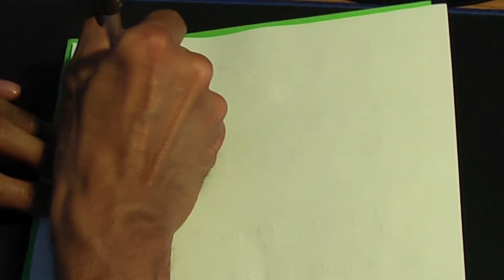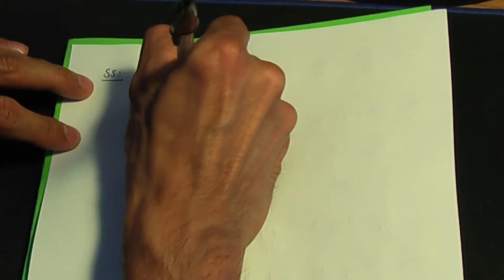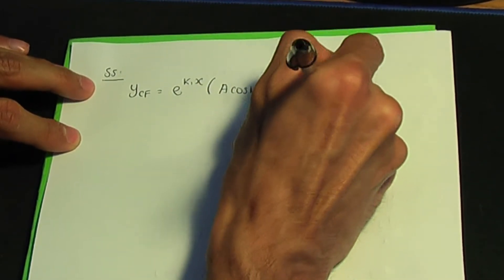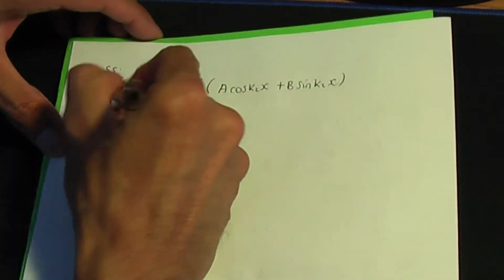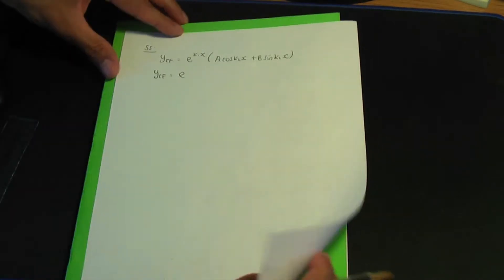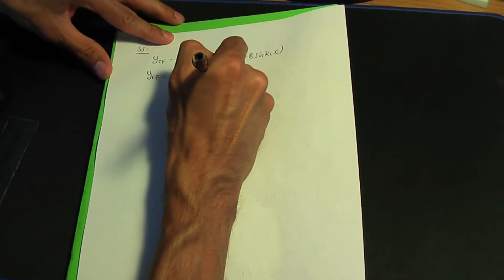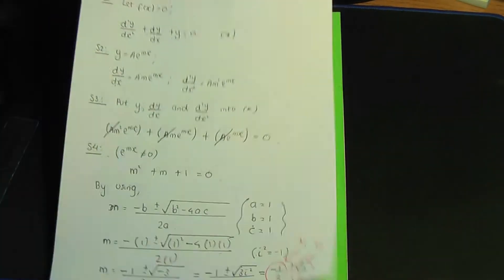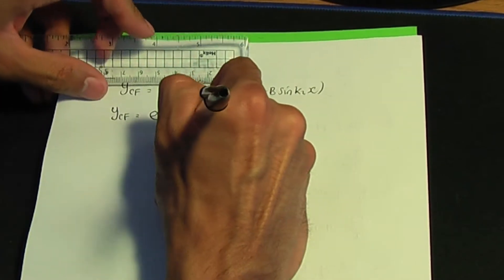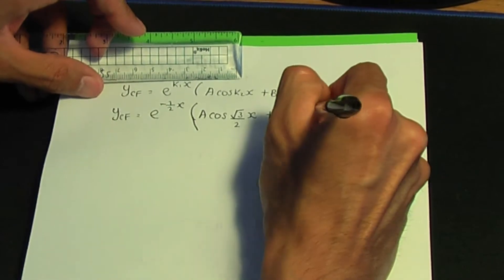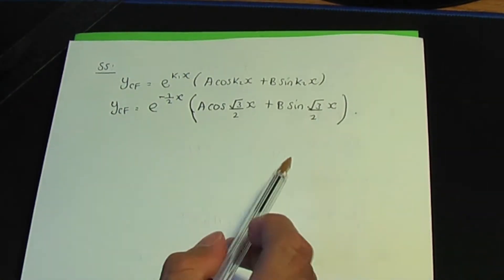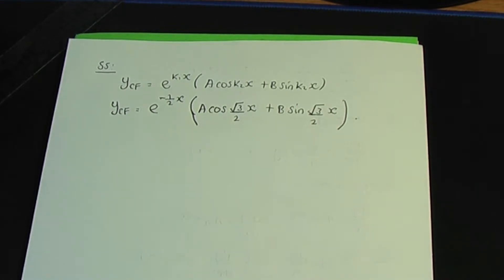Step number five — our choice for yCF. Replacing k1 and k2, yCF = e^(−x/2) · (a·cos((√3/2)x) + b·sin((√3/2)x)). This is the form of our complementary function.